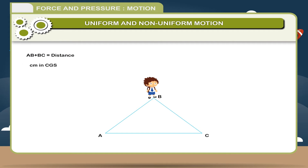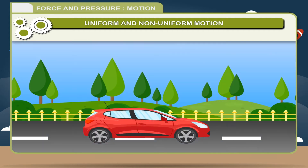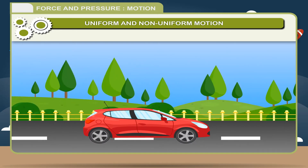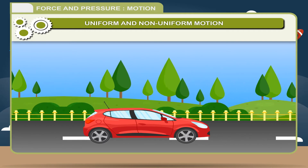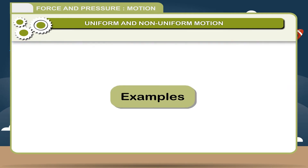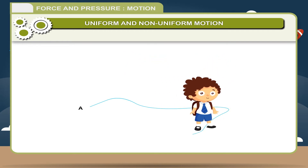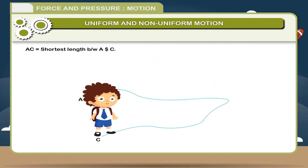Its units are centimeter in CGS and meter in SI. Displacement: the length of the path travelled by a body in a certain interval of time in a specific direction is called displacement. In the figure, the person moves from point A to C. The displacement AC equals the shortest length between A and C. It is a vector quantity because it has both magnitude and direction. Its units are centimeter in CGS and meter in SI.